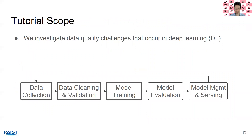This leads to the tutorial. We investigate data quality challenges that occur in deep learning. Here's a simplified diagram of end-to-end machine learning: we start from data collection, then perform data cleaning and validation, then model training, then model evaluation, then model management and serving. This tutorial will cover the first three steps.